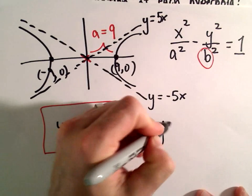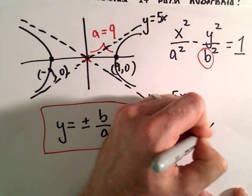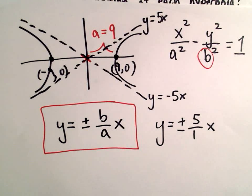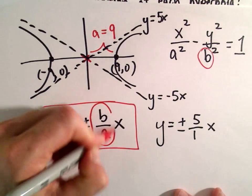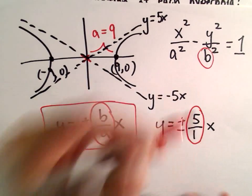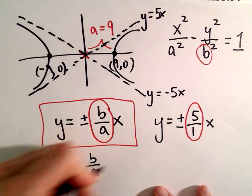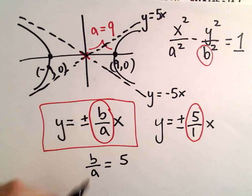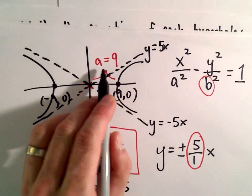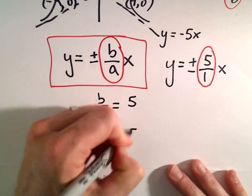So again, we've got that y equals positive and negative 5 over 1 times x. So what that tells me is simply that b over a is going to have to equal 5 over 1. Okay, so b over a equals 5 over 1. Again, we know what our a value is. We said that a was equal to 9.